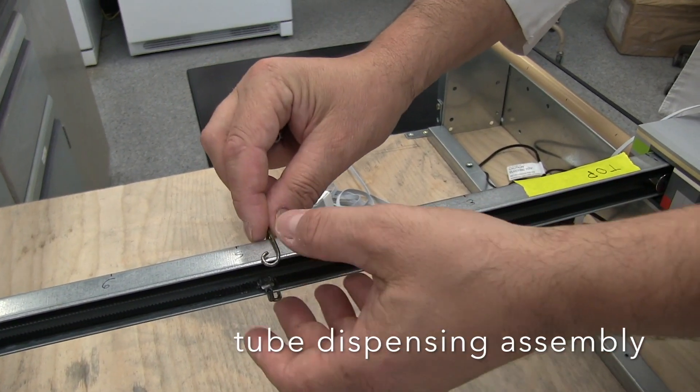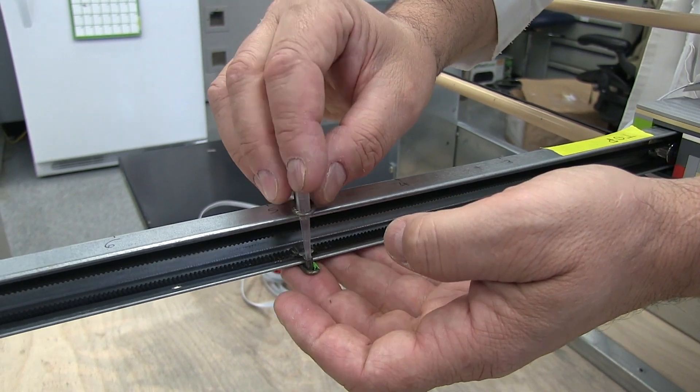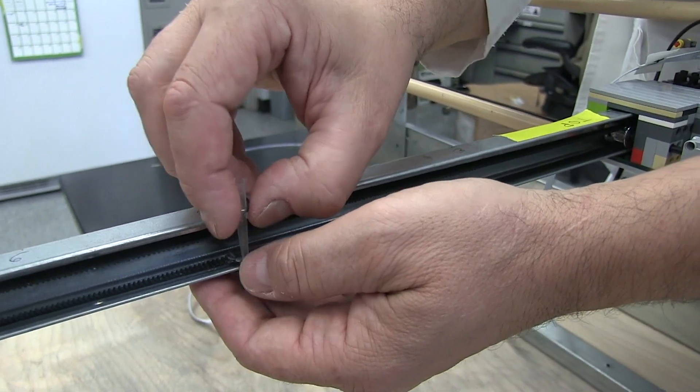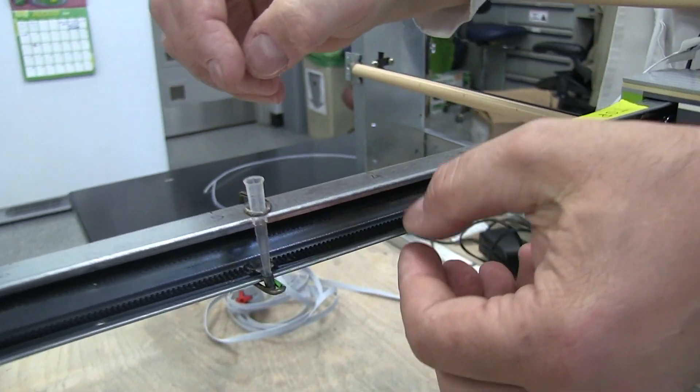In this step, the HPLC tube dispensing assembly is attached with a simple 200 microliter pipette tip used to thread the HPLC tubing through.